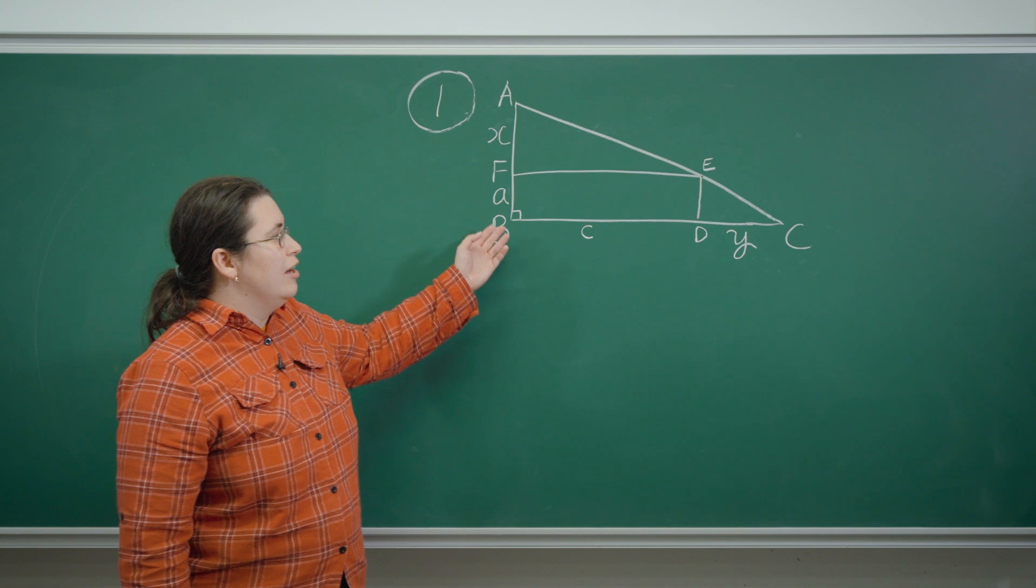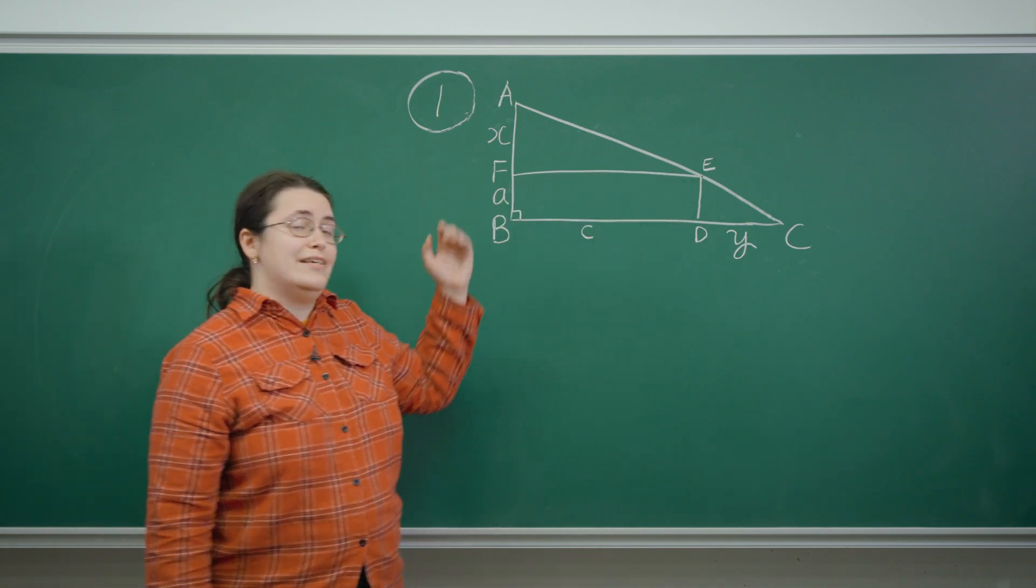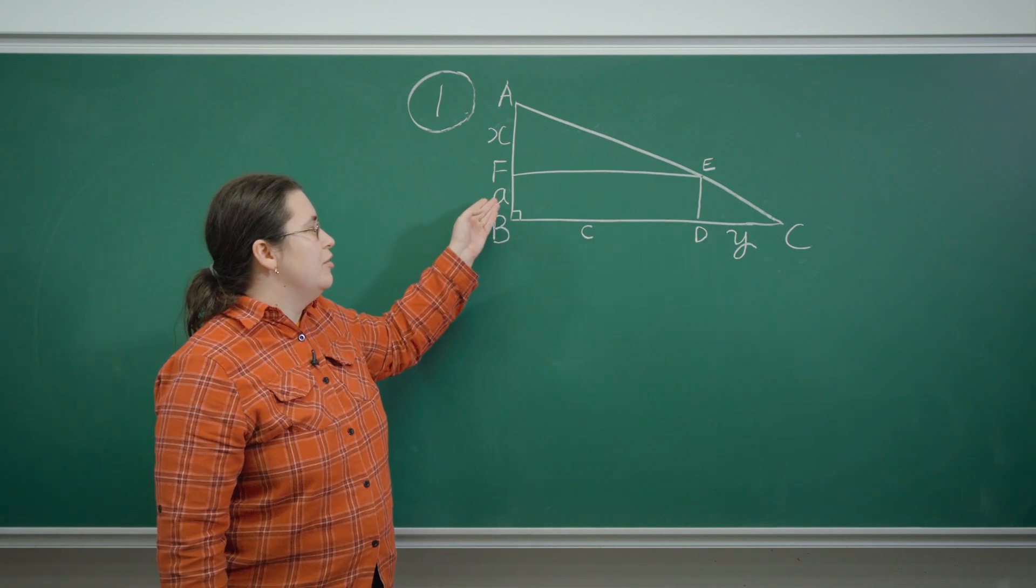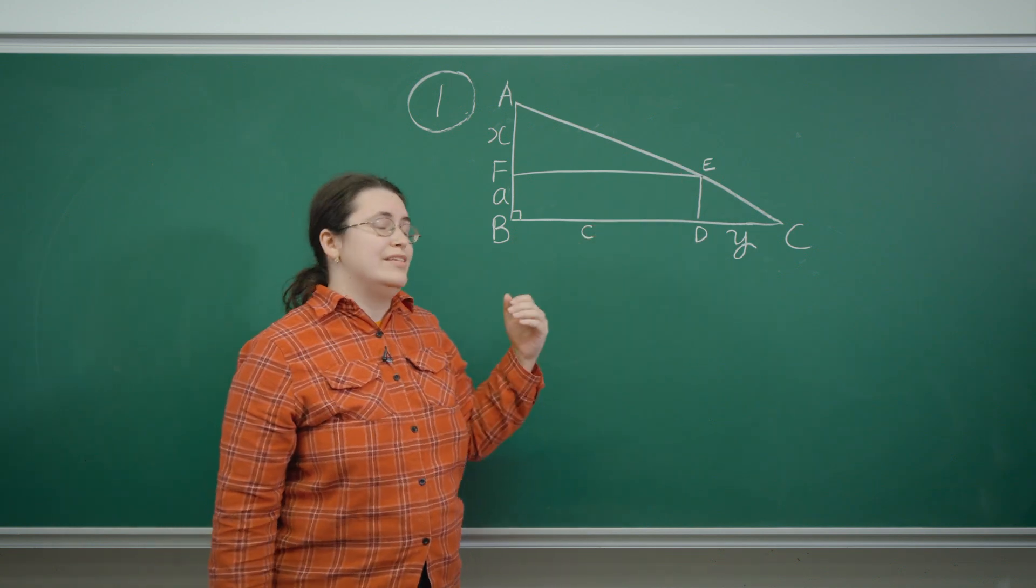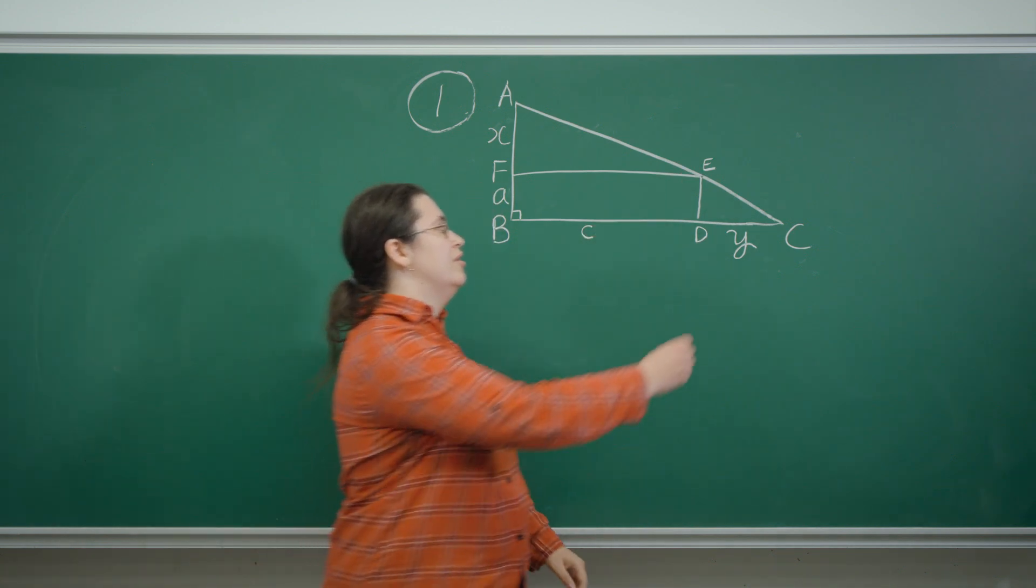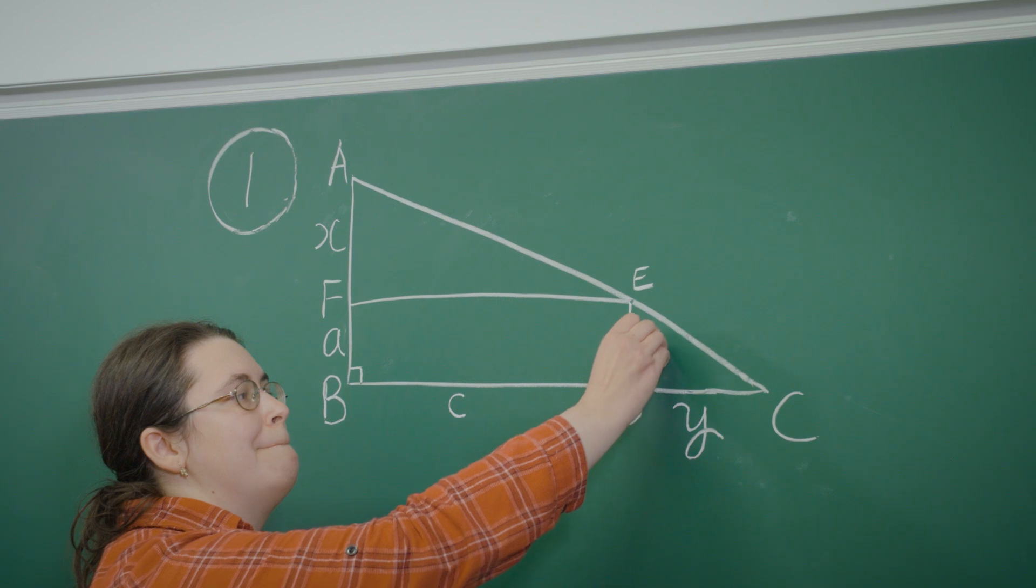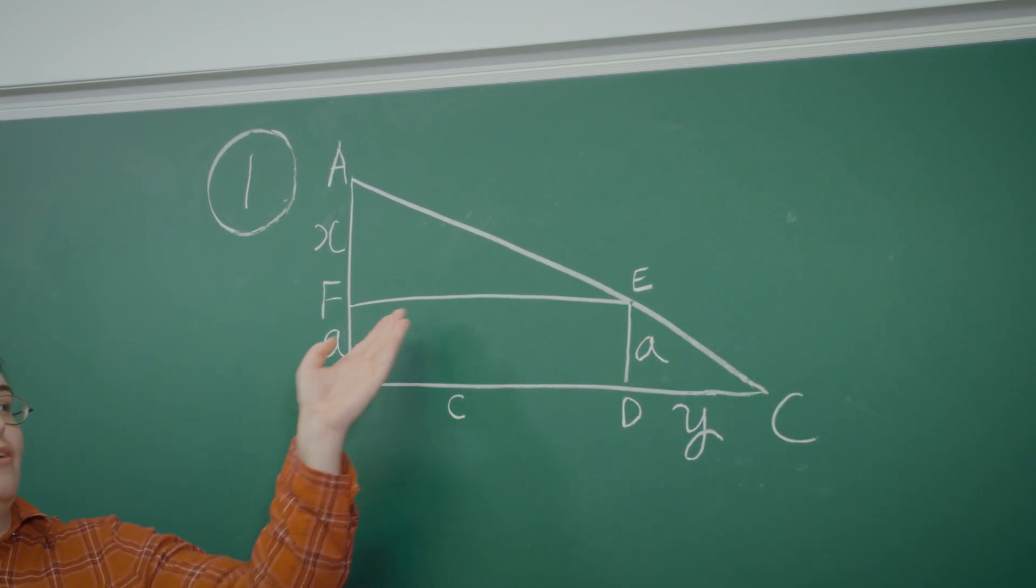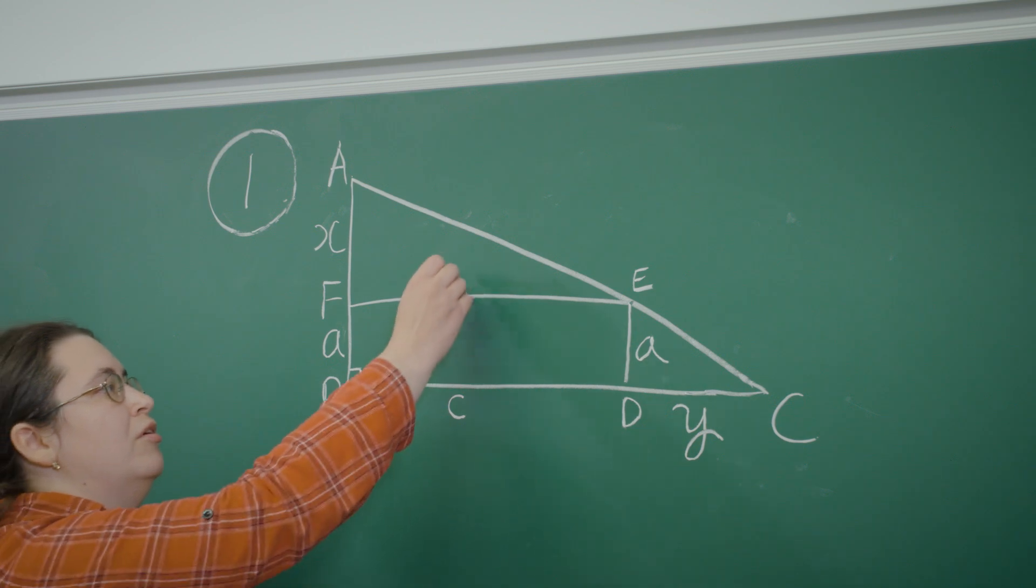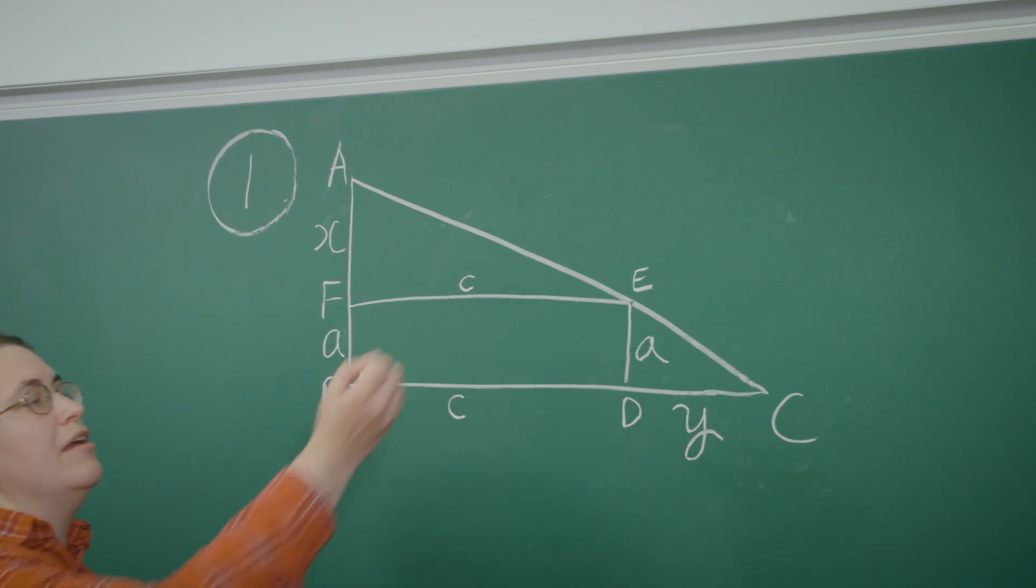In this question we have the rectangle BDEF and so we not only know the side length for BF, we also know that DE is equal to BF which is equal to A. We also know that BD is equal to EF and is equal to C.